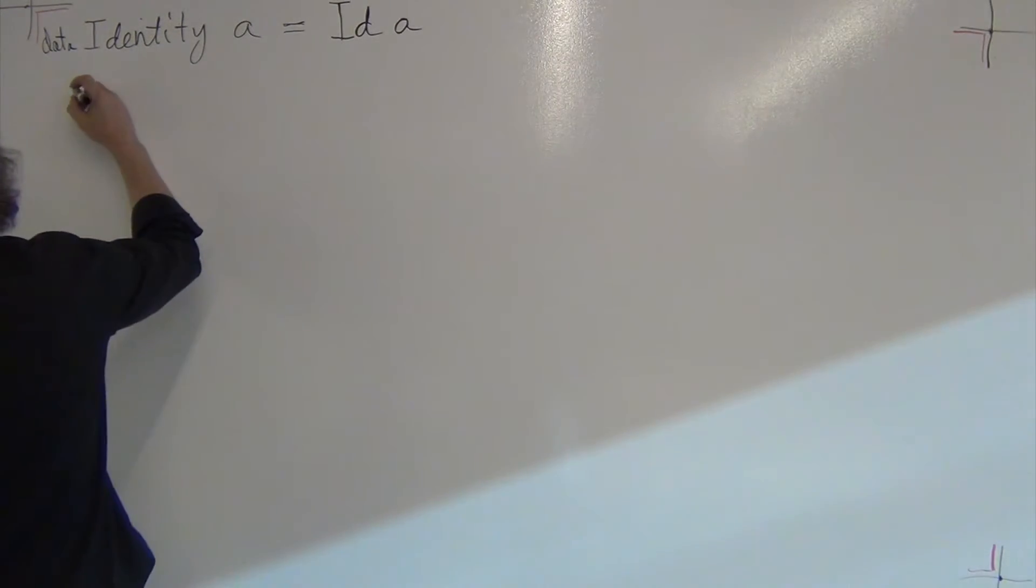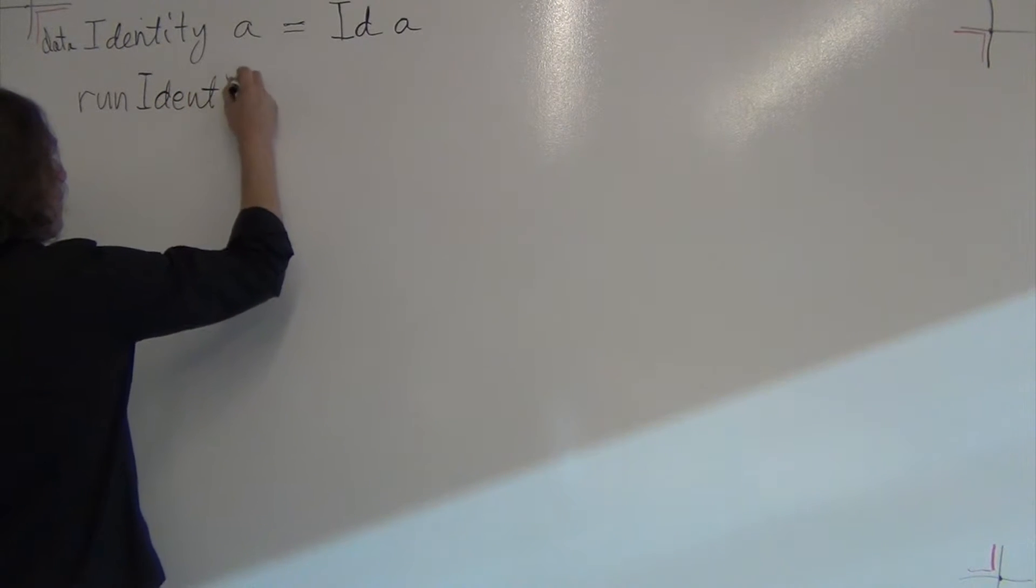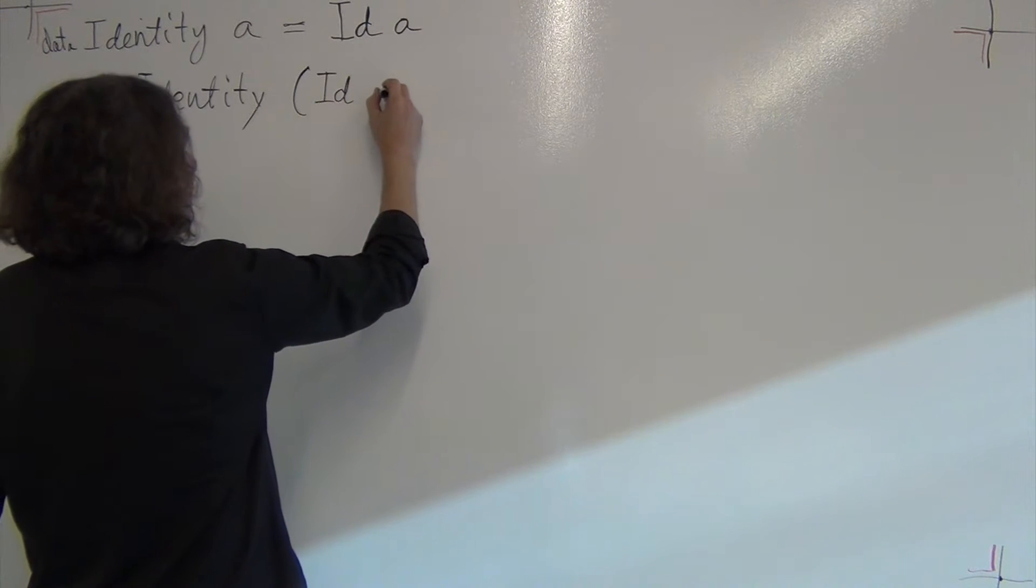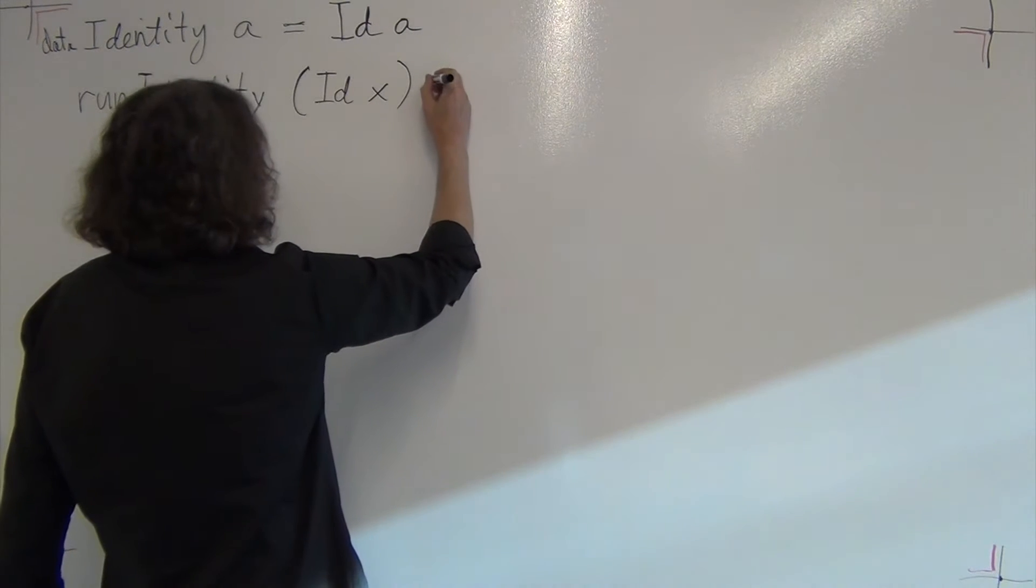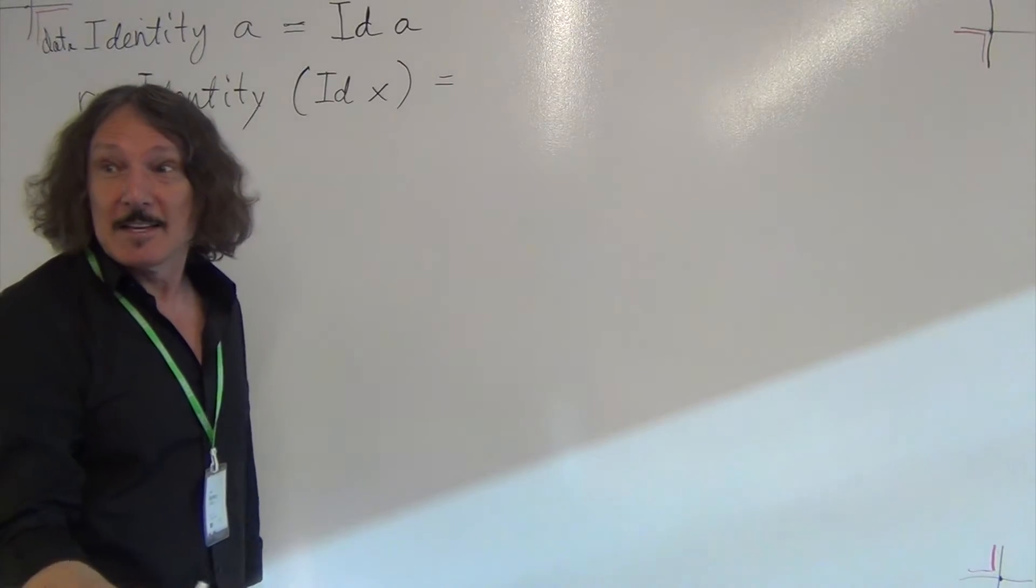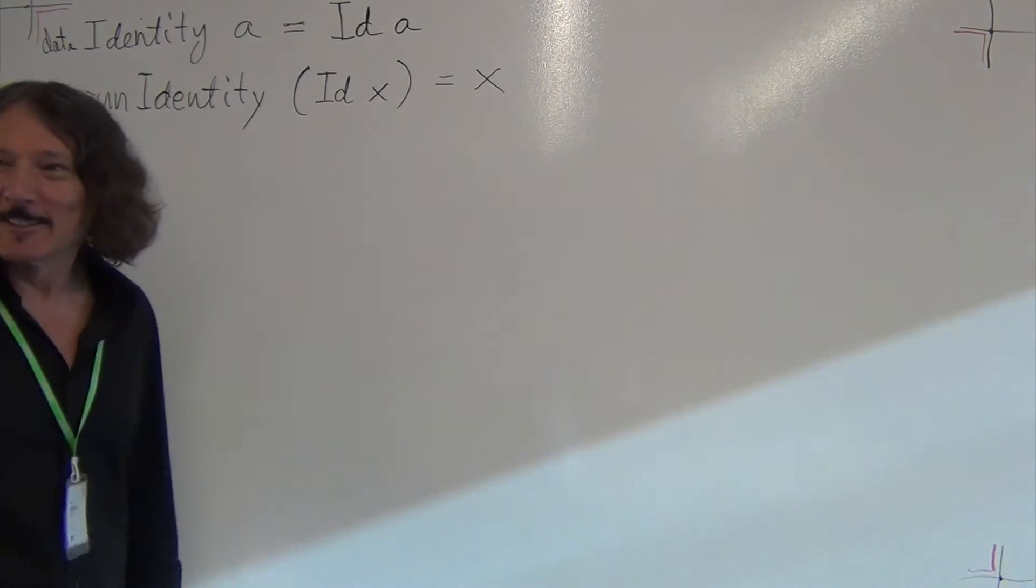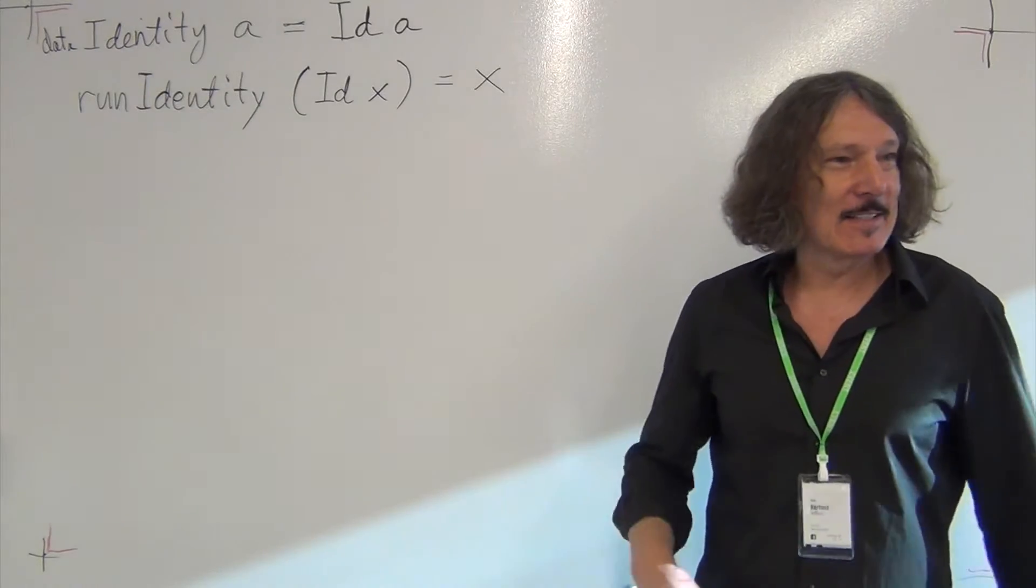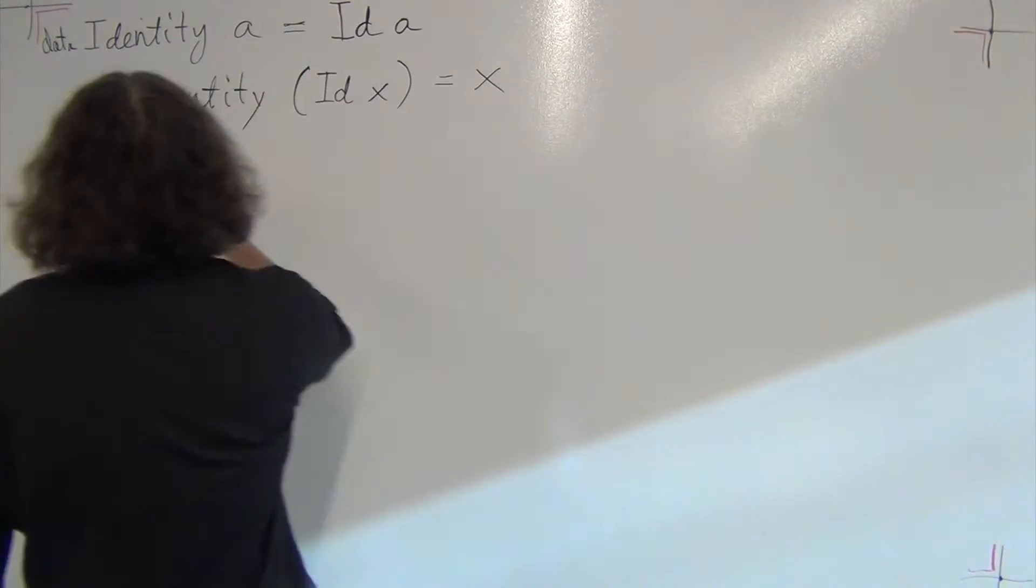And we can also extract this value A and we'll call this extraction function run identity. So run identity takes, pattern matches to some X, ID of X. So pattern matches this constructor, extracts the X, and it returns what? Something of type A. X! Yes! This is really stupid code, right? It doesn't do anything. But it so happens that even the simplest thing is both a functor and a monad. The functor thing I'll leave you as an exercise, but let's do the monad.